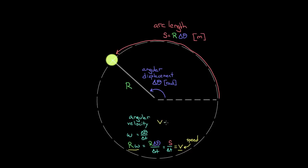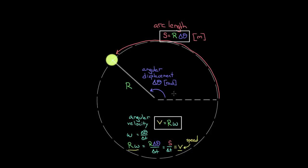Note that this is speed, not velocity, because arc length is distance, not displacement — distance per time is speed, not velocity. So we're relating the angular velocity to the speed. This arc length formula relates how many radians an object has rotated through to the distance it's traveled. And the formula v = rω relates the angular velocity — radians per second — to how many meters per second the object is traveling along the arc.